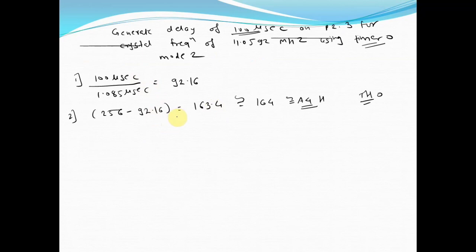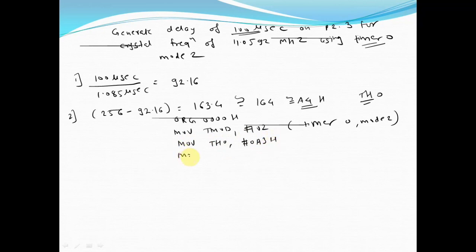First instruction is ORG 0000H, this is an assembler directive. Then MOV TMOD, #02H - this is timer 0 in mode 2. Now how to load these values in TMOD register I have already explained in my previous video on TMOD. Now you have to load the values: MOV TH0, #0A4H and also load the same value in TL0 register.